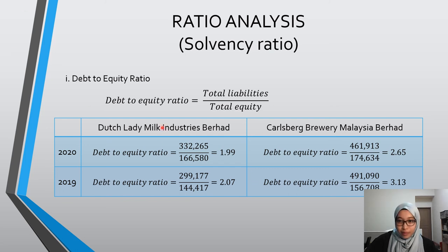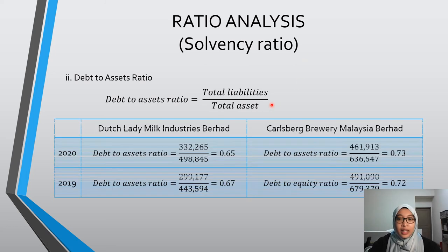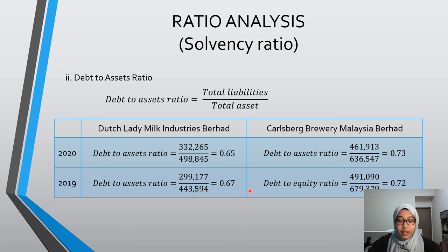The second solvency ratio is the Debt-to-Assets Ratio, which measures the percentage of assets financed with debt. For Dutch Lady, the ratio was 0.65 in both 2020 and 2019 — the difference is small but still visible. For Carlsberg, the ratio was 0.75 in 2020 and 0.72 in 2019. The difference is also small, but we can see that Carlsberg has a higher percentage of assets financed with debt in 2020.